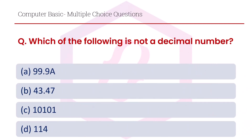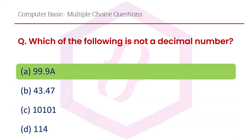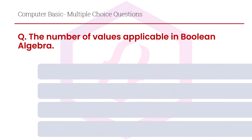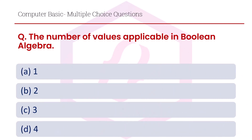Which of the following is not a decimal number? Option A 99.9A, option B 43.47, option C 10101, option D 114. The right answer is option A.